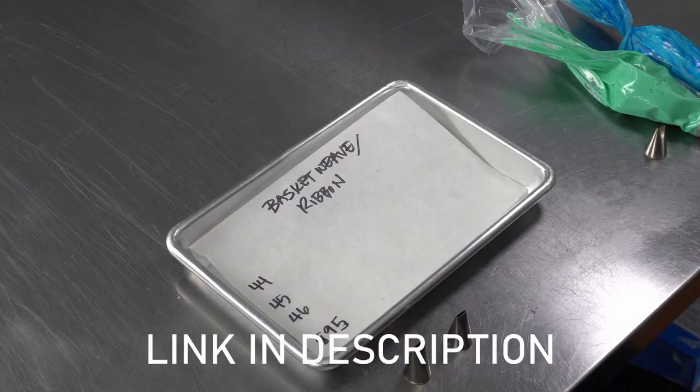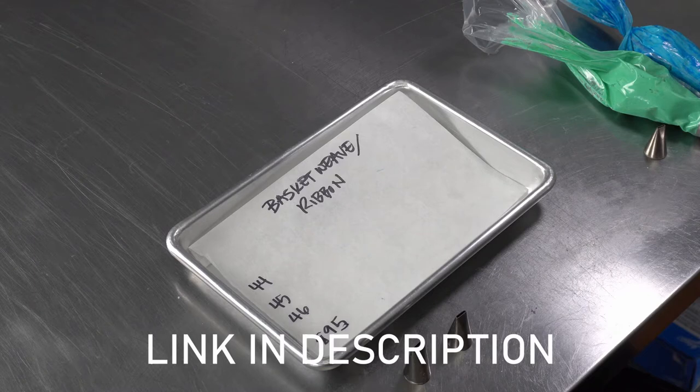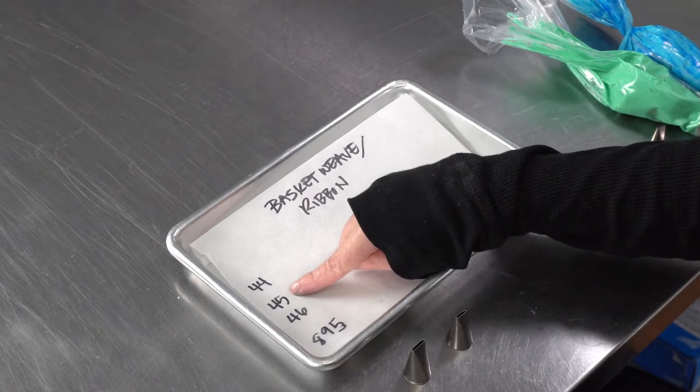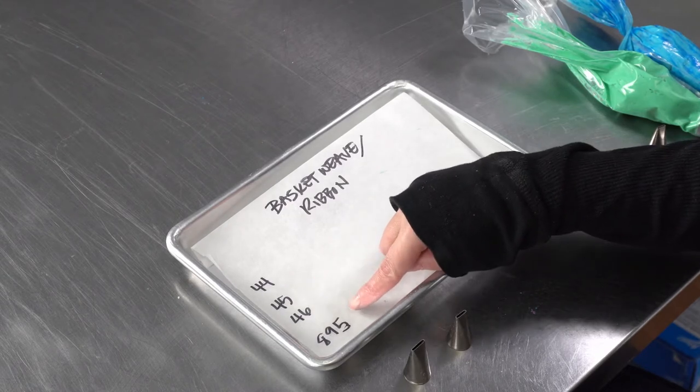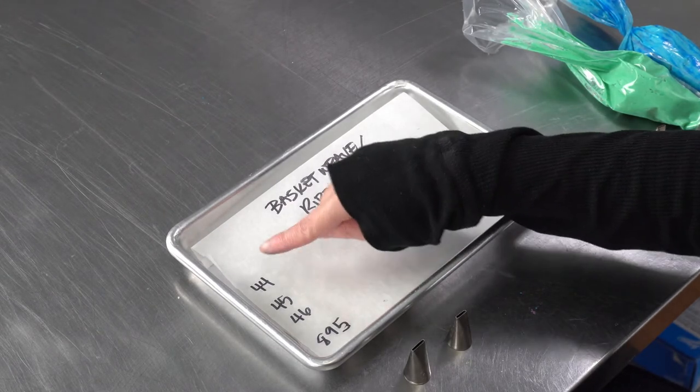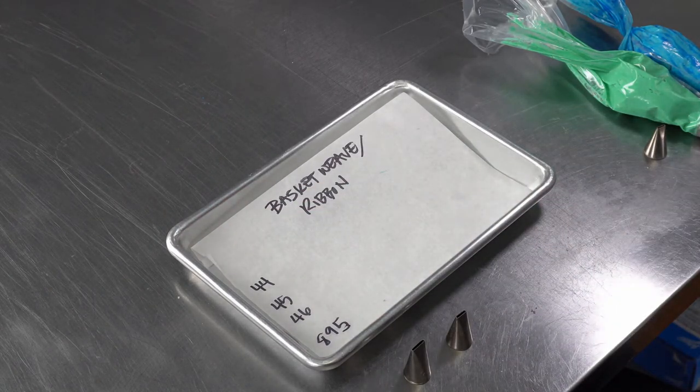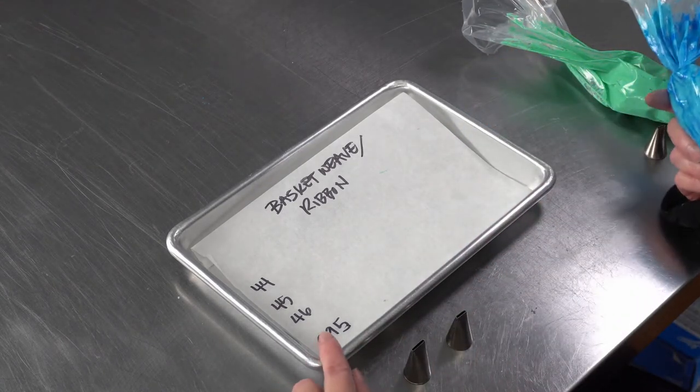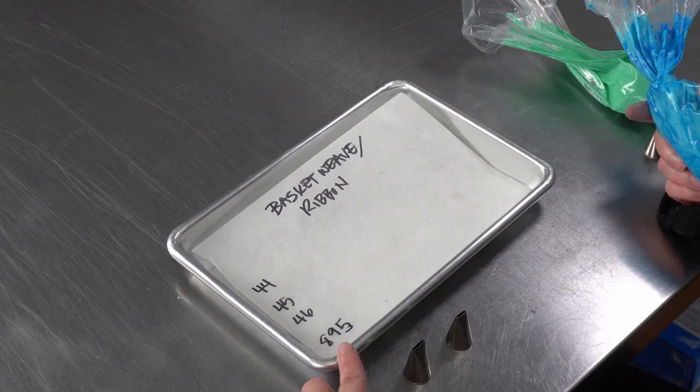There's a couple of really popular sizes that we use, and they are number 44, 45, 46, and 895. The ones in the 40s are standard size tips that will work with a standard size coupler in your bag, and the 895 is a larger decorator size tip.